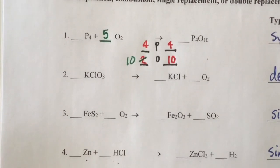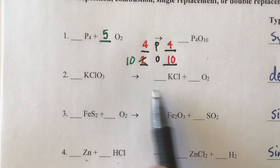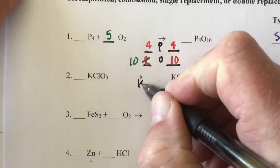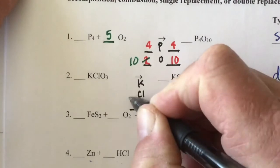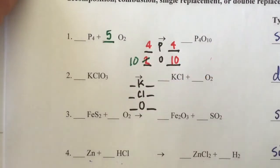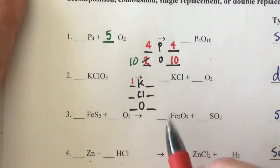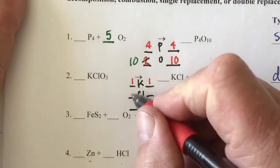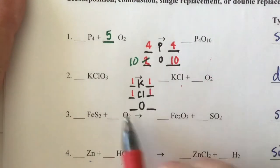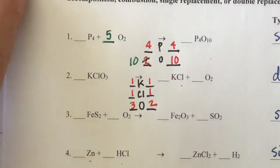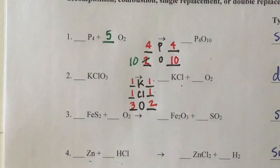This is our decomposition reaction of potassium chlorate. Potassium chlorate decomposes to give us potassium chloride and oxygen gas. We list potassium, chlorine, and oxygen, and let's count: one potassium in the reactants, one in the products; one chloride on each side; three oxygens in the reactants and two in the products.